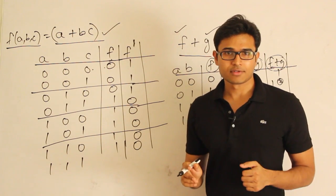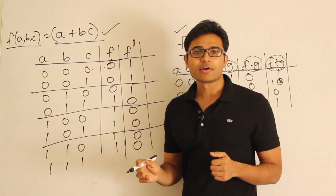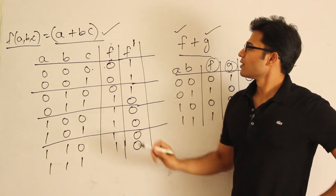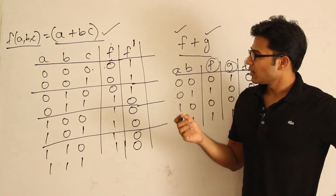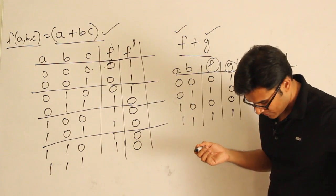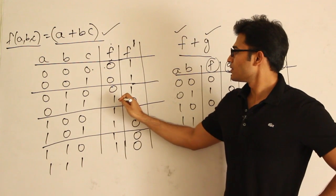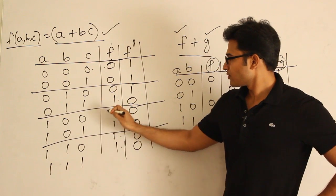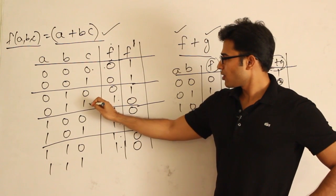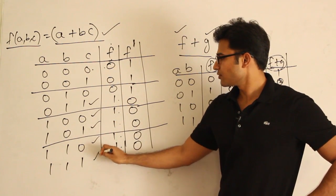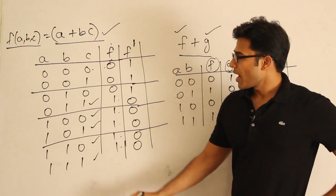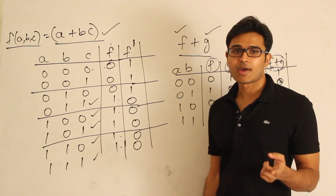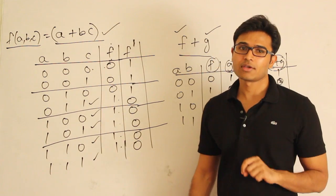Canonical representation has two different forms - I will show you one form first. See this function f. What are all the values of a, b, c - the rows - for which this value is 1? It is 1 here, 1 here, 1 here, 1 here, 1 here - so for five combinations the output is 1. Either if the input is this one, or this one, or this one, or this one, or this one, the value is going to be 1. So how can you put it in canonical form?